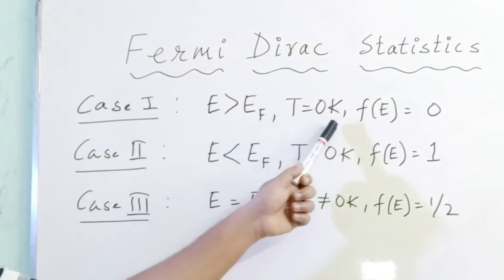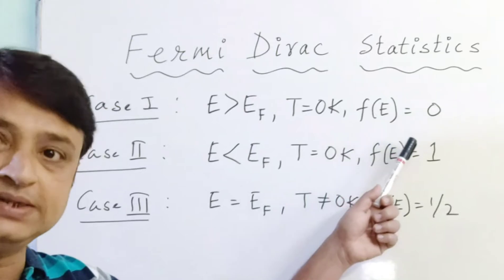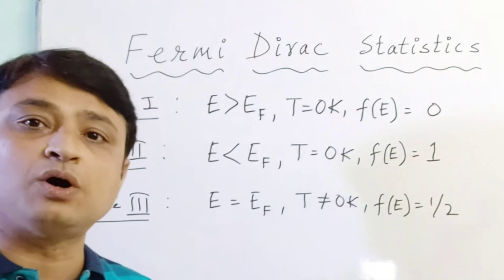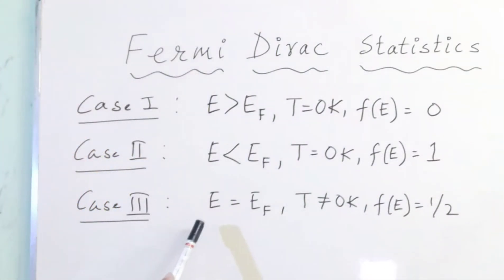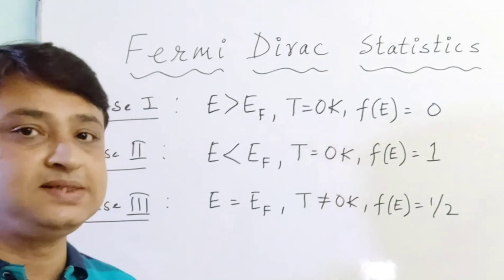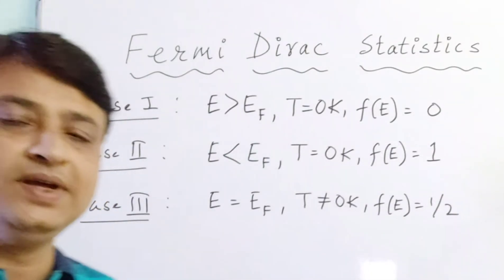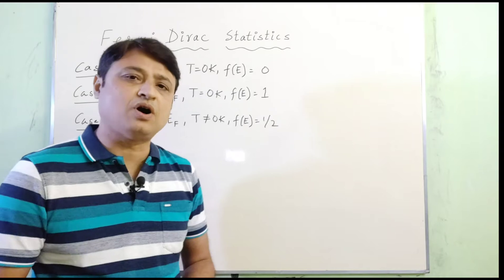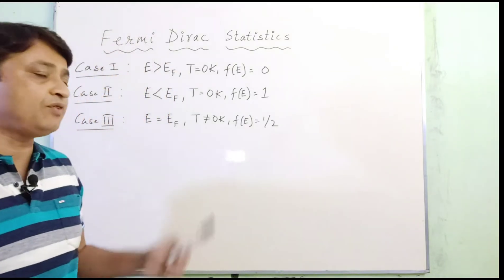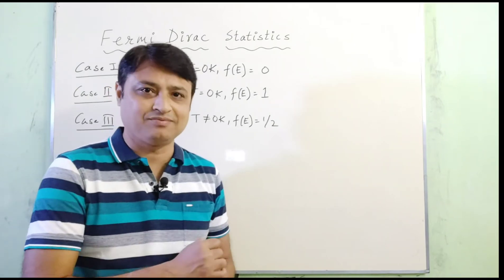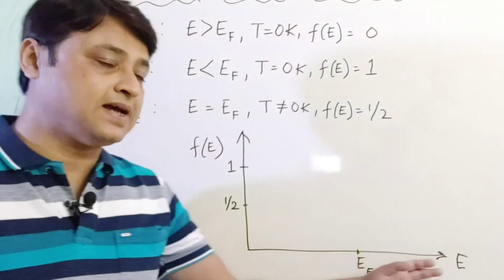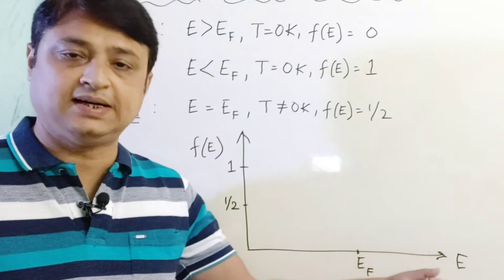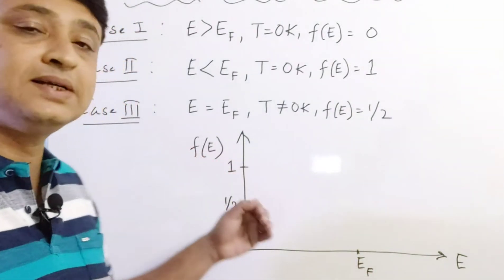To summarize the three cases: for E > Ef at T = 0K, f(E) = 0; for E < Ef at T = 0K, f(E) = 1; and for E = Ef at T ≠ 0K, f(E) = 1/2. Now let's incorporate these three values and plot a graph of the Fermi-Dirac distribution function f(E) versus energy E, with energy as the independent variable on the x-axis and f(E) on the y-axis.